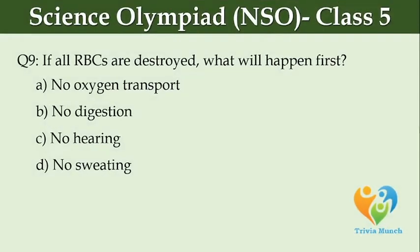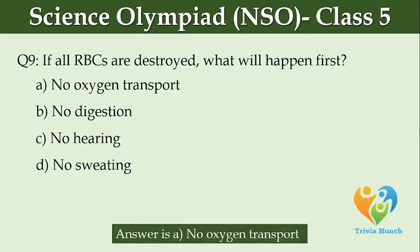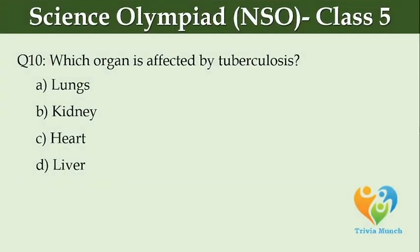If all RBCs are destroyed, what will happen first? Option A: no oxygen transport, Option B: no digestion, Option C: no hearing, Option D: no sweating.